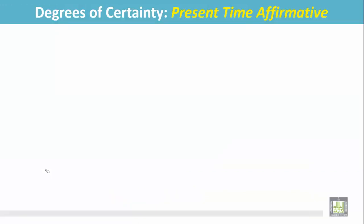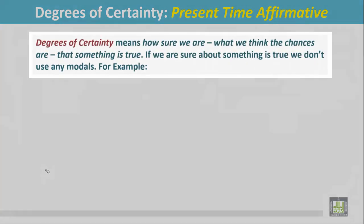Present Time Affirmative. Degrees of Certainty means how sure we are - what we think the chances are that something is true. If we are sure about something is true, we don't use any modals. For example: